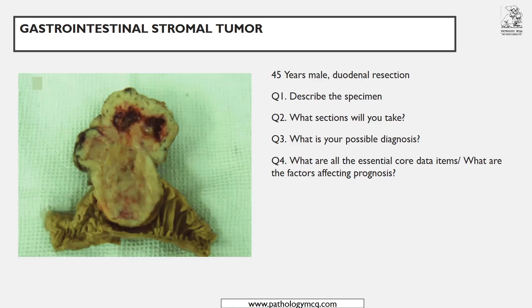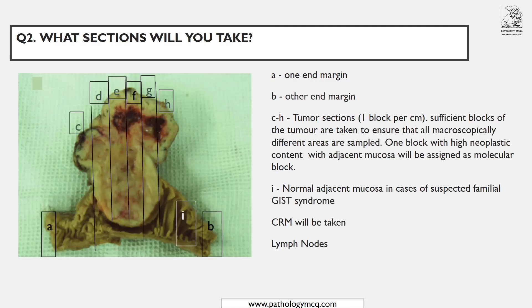You will have a set of questions, and the first thing you do is mark it: A and B become one margin. If you are well aware whether it is a proximal or distal margin, then mention it. If not, just mention it as one margin and another margin. You are going to give sections accordingly.